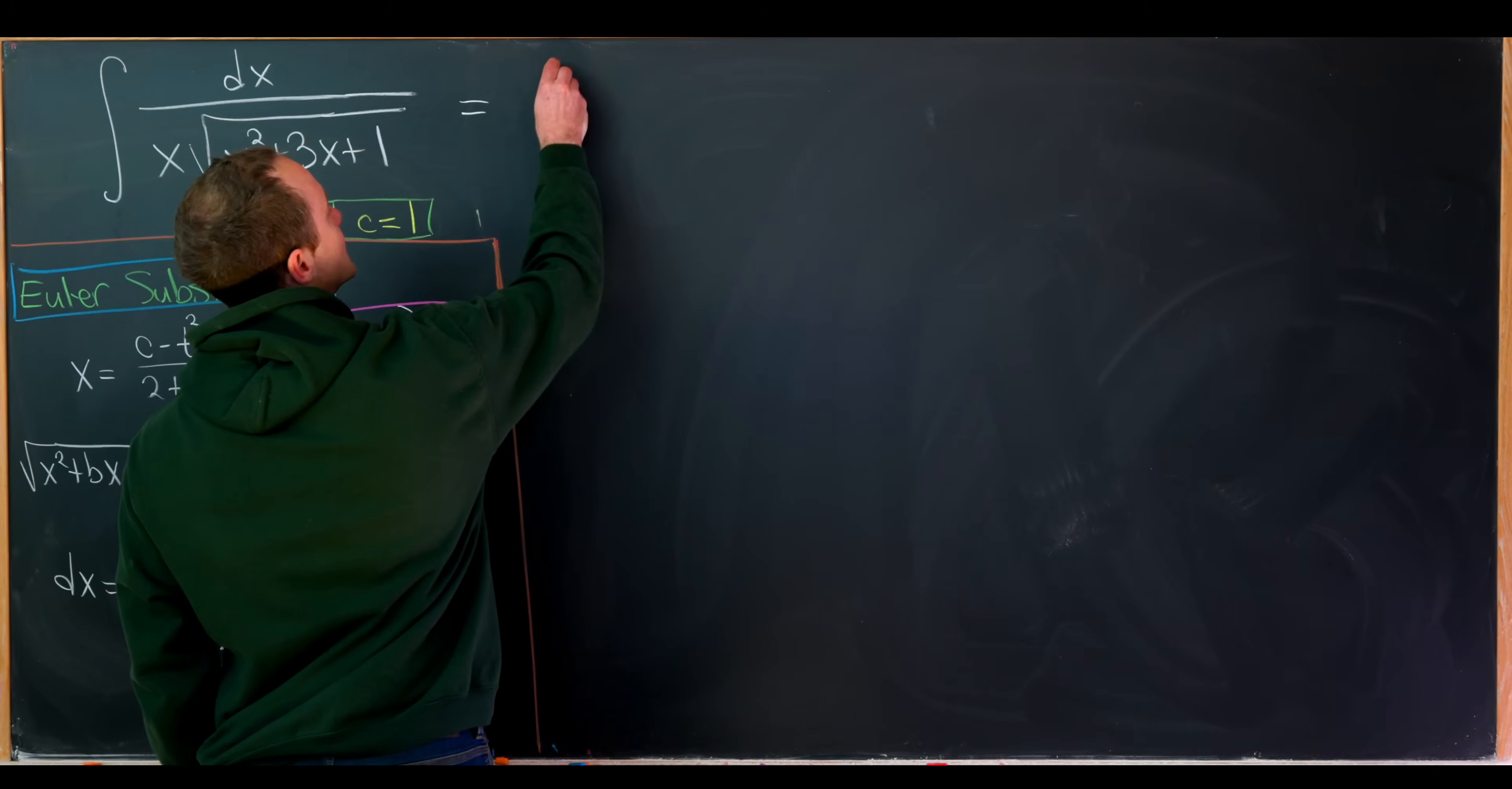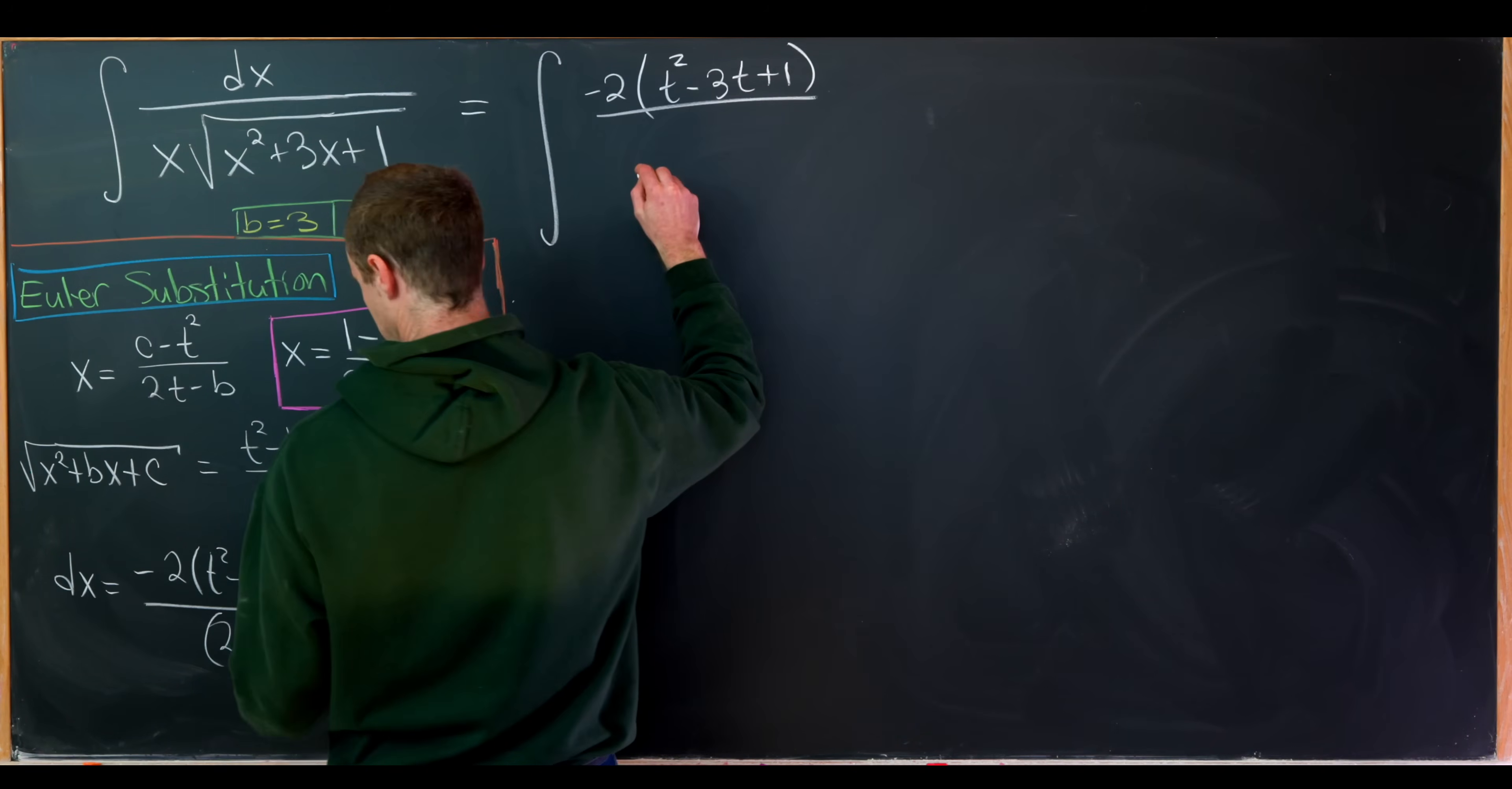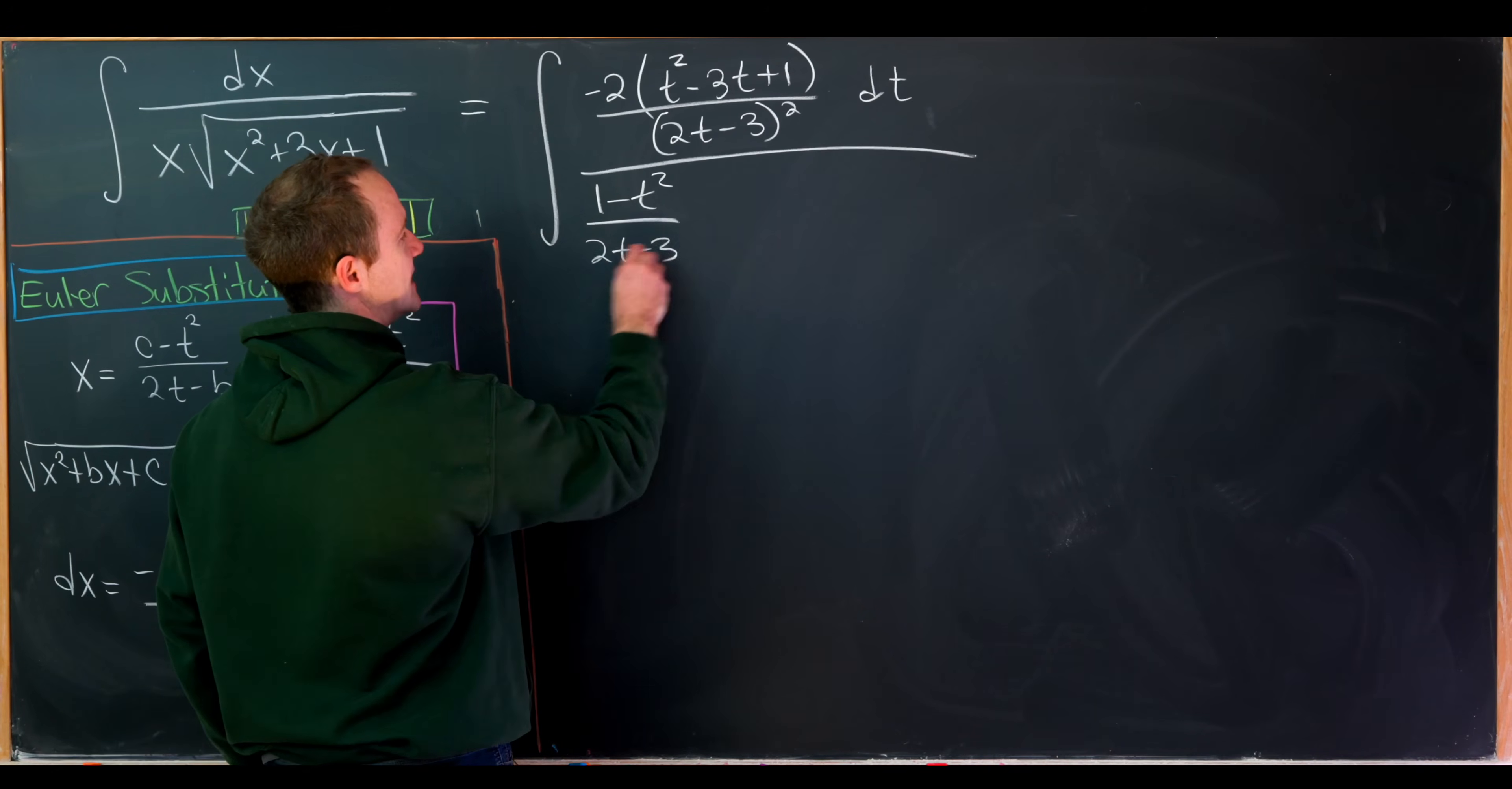Okay, so let's see what this turns into. So we'll have the integral of, so let's put our dx term in the numerator first. So that will be minus 2, and then we'll have t squared minus 3t plus 1 all over, that'll be 2t minus 3 quantity squared dt. Okay, so we've taken care of just this differential x term.